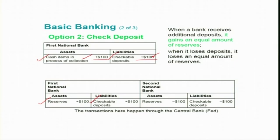What happens to the second bank that issued this check? In their account they are actually losing $100, because once the cash items in process of collection are collected, the second bank's reserves decline by $100 and they also lose the checkable deposit of $100. All these transactions happen through the central bank — through the Fed, or through the RBI — between the two banks involved.